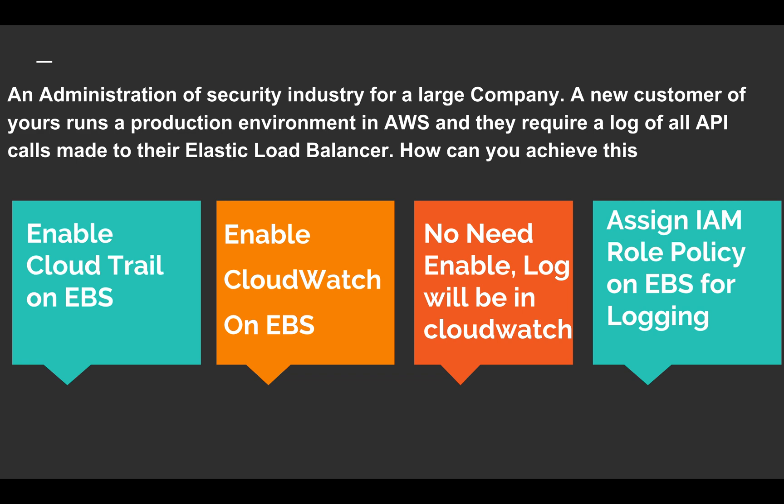Let's start from the bottom. Assigning an IAM role policy on ELB for logging — there is no such policy for logging API calls. The next option, no need to enable and logs go to CloudWatch automatically — yes, logs do go to CloudWatch automatically for EC2 instances, but that covers application logs or redirection logs, not the internal API calls made to the load balancer.